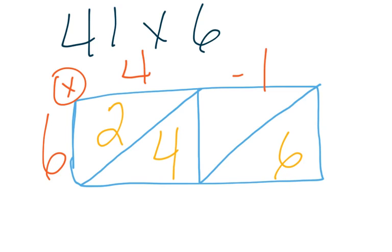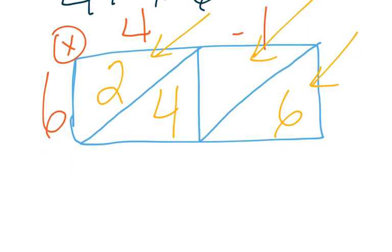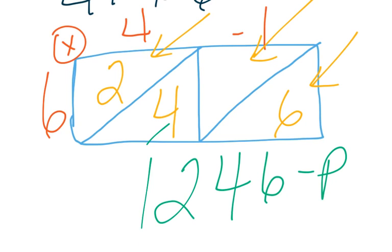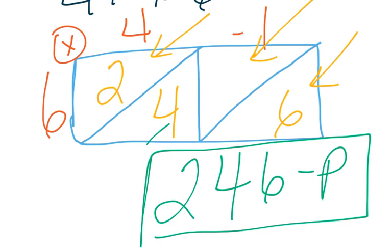Remember when we add, we add going down each row, just like that. Okay, so there's nothing with 6, bring down 6. There's nothing with 4, bring down 4. There's nothing with 2, bring down 2. This is our final product, and we box it.